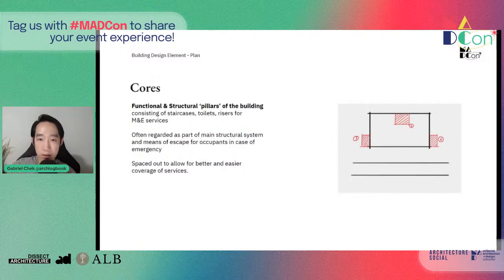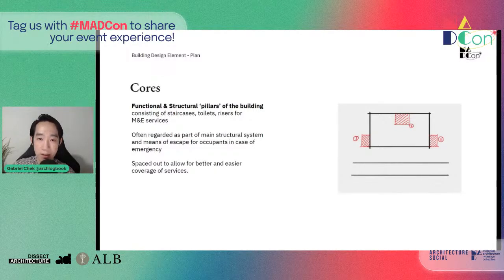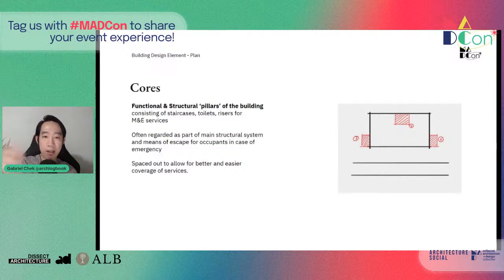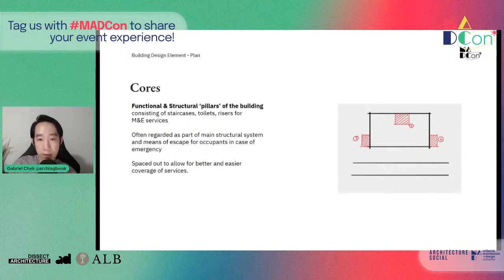Next, we have the cores. Cores are the functional and structural pillars of the building, consisting of staircases, toilets, risers for M&E services, and so on. These programs are usually clustered together to form a structural element, usually at the center or corners of the building to better support the structure of the floor plates, and spaced out to allow easy access to the services.